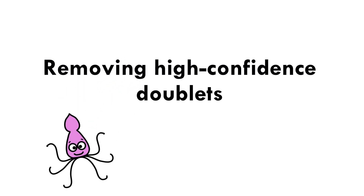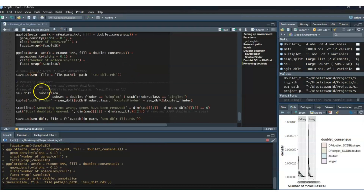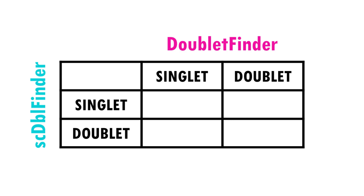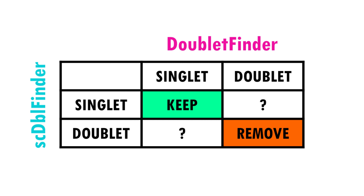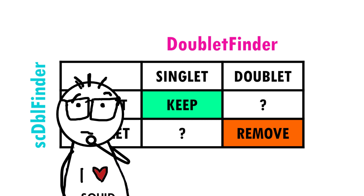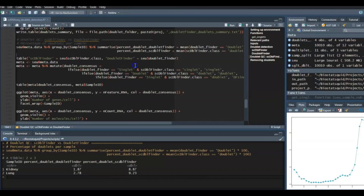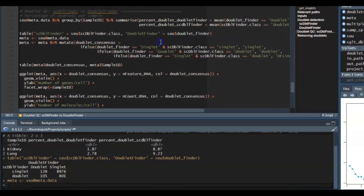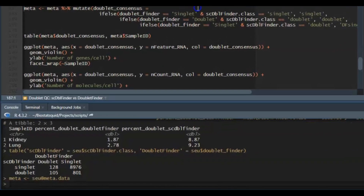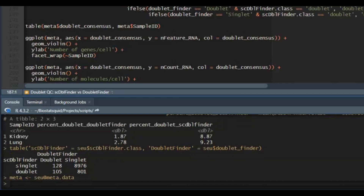Now that we have it saved, we can remove doublets from our dataset. We can do this very easily with the function subset, which is part of Seurat. We clearly want to remove cells that were classified as doublets by both tools, and we also know that we want to keep cells that were classified as singlets by both tools. The tricky part is the cells that were classified as singlets by one tool and doublets by another — which tool is correct? They are both inferring if the cell is a doublet, so it is not easy to decide. Here we have cells classified as doublet by SCDoubletFinder but singlets by DoubletFinder, and the other way around.